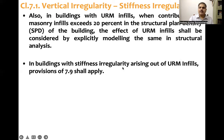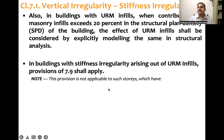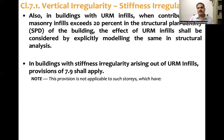Also, in buildings where stiffness irregularity arises out of unreinforced masonry infills, the provisions of clause 7.9 shall apply. If structural URM infill walls are present in some floors, they contribute to stiffness in those floors, which can create a soft story in the floor immediately below. In that case, modeling of the URM infill walls must be considered.